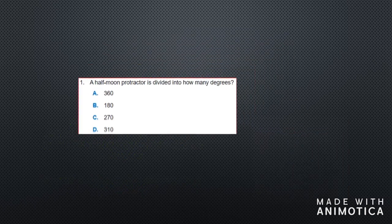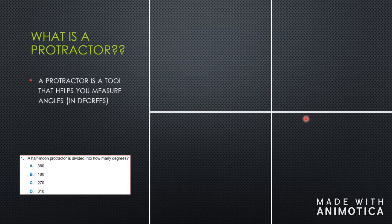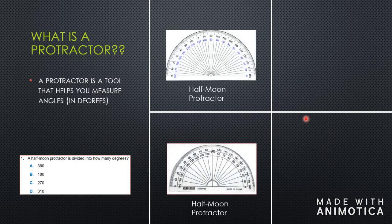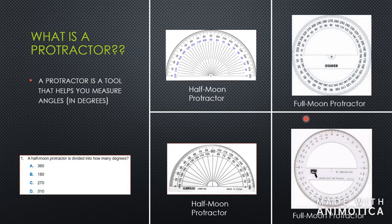A protractor is a tool that helps you measure angles in degrees. You have your half moon protractor, which is a semicircle, and you have your full moon protractor. The full moon protractor starts from zero and goes around — you can go either clockwise or anti-clockwise.